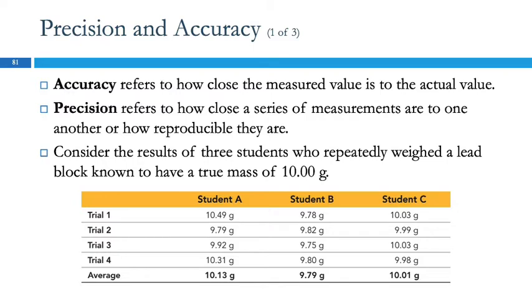So you can be accurate and precise, you could be not accurate and not precise, any combination. Accuracy refers to how close your measured value is to the true value.